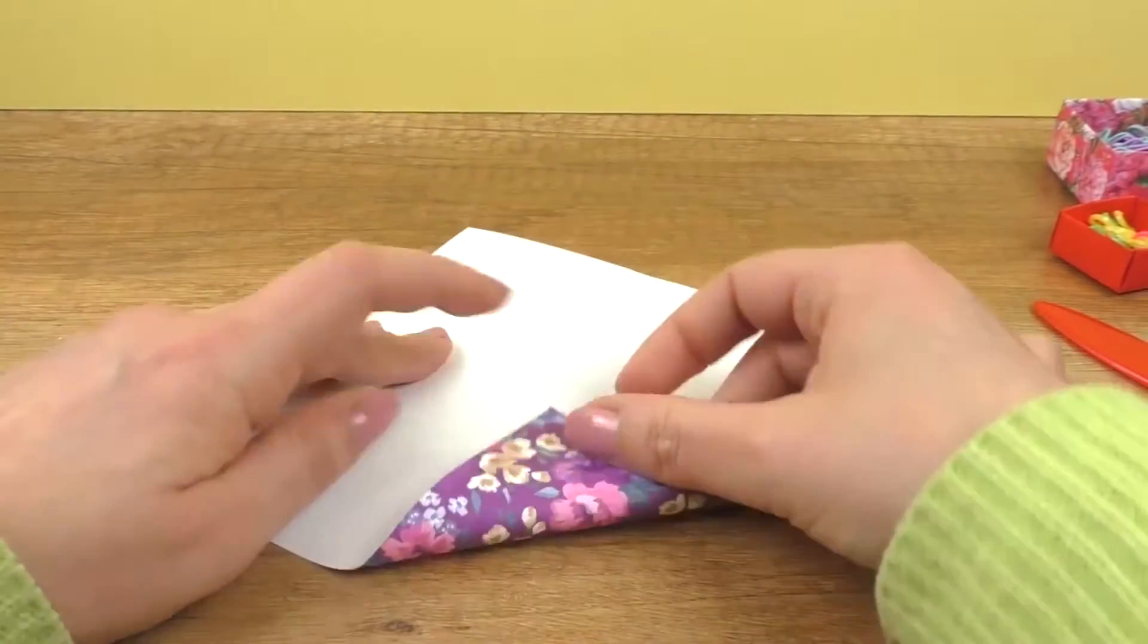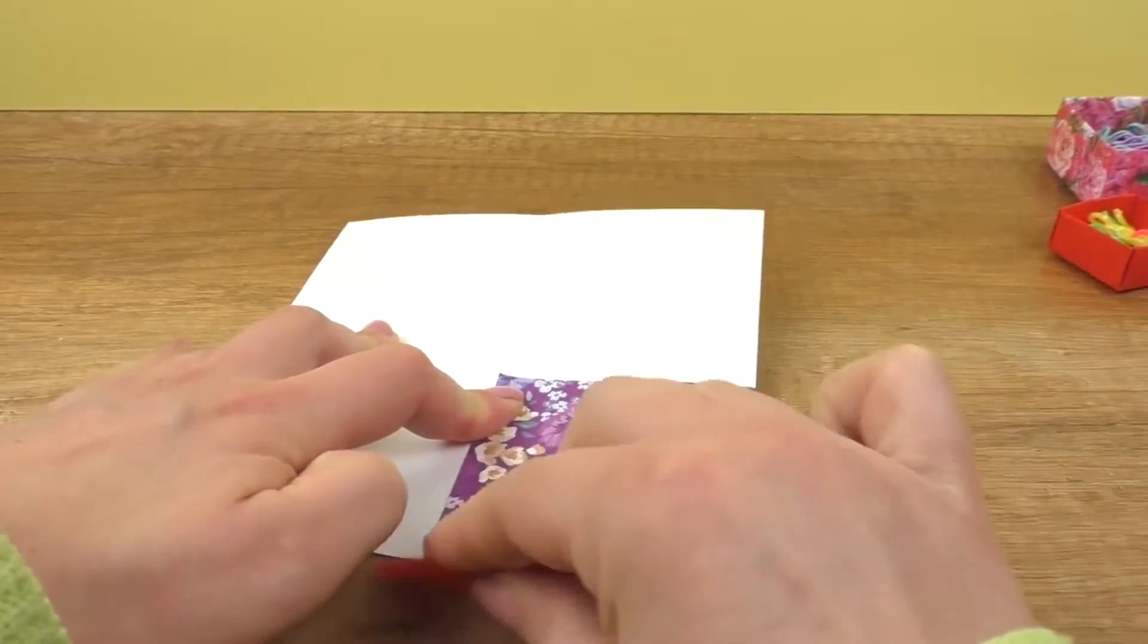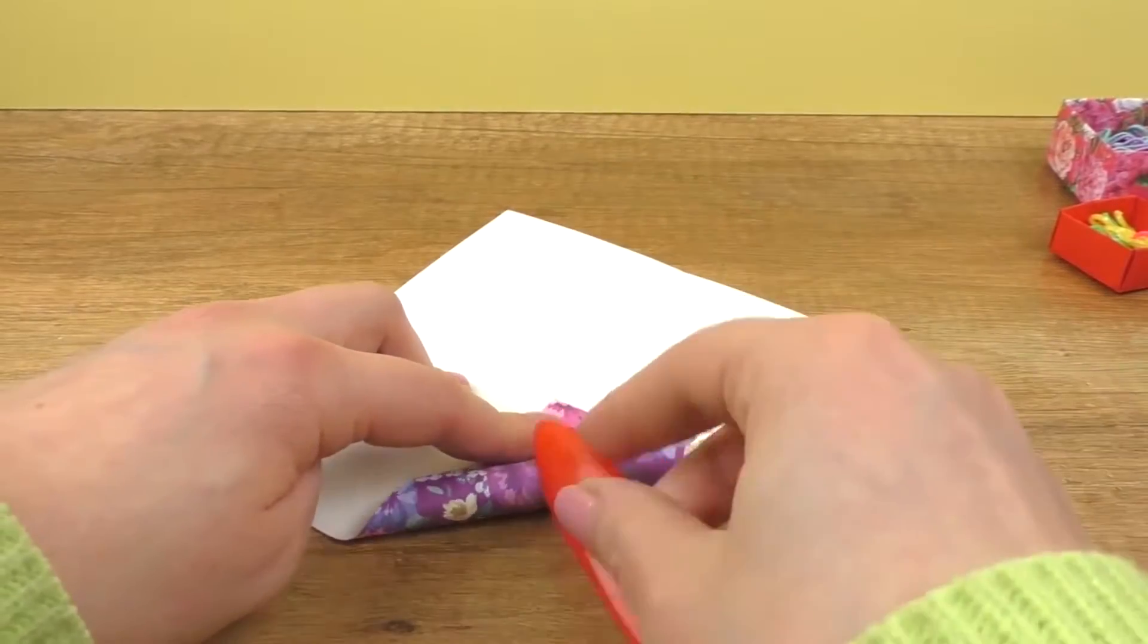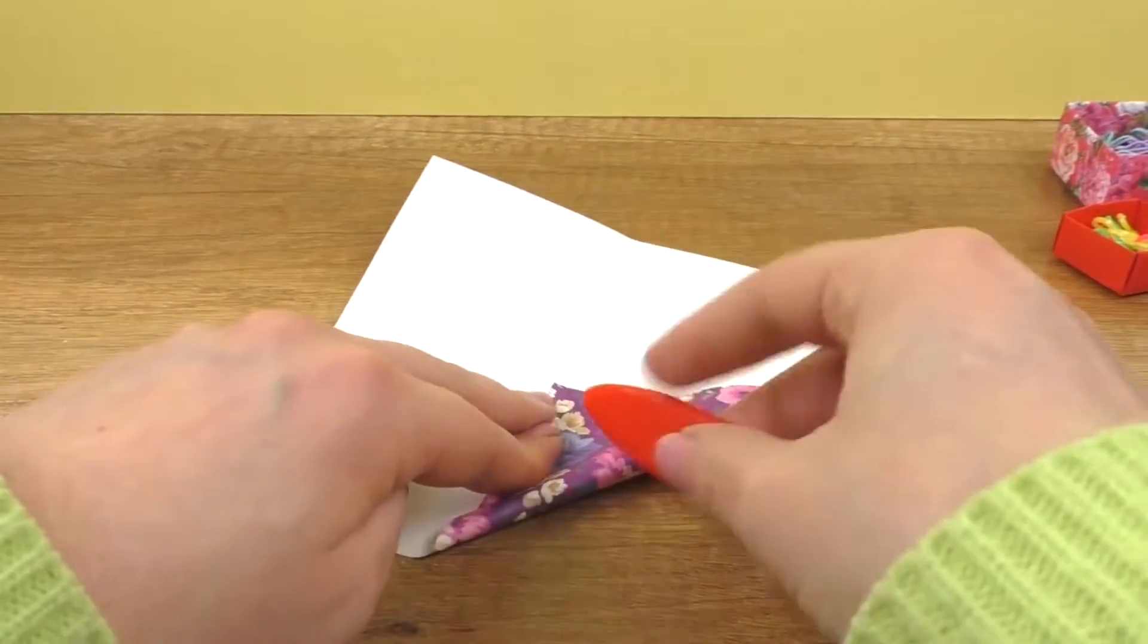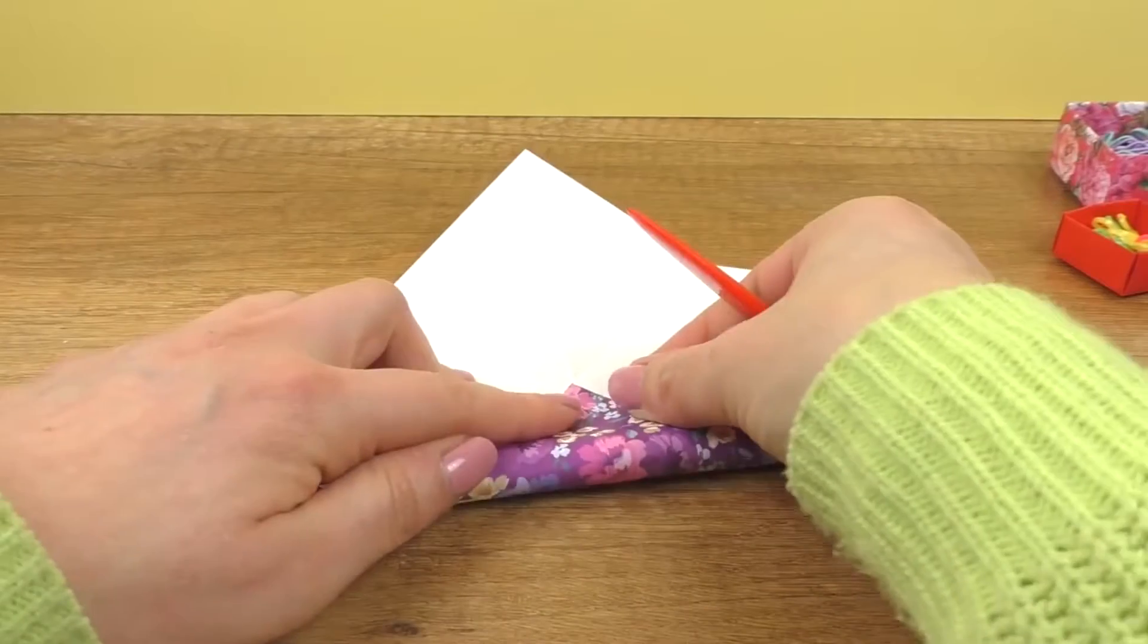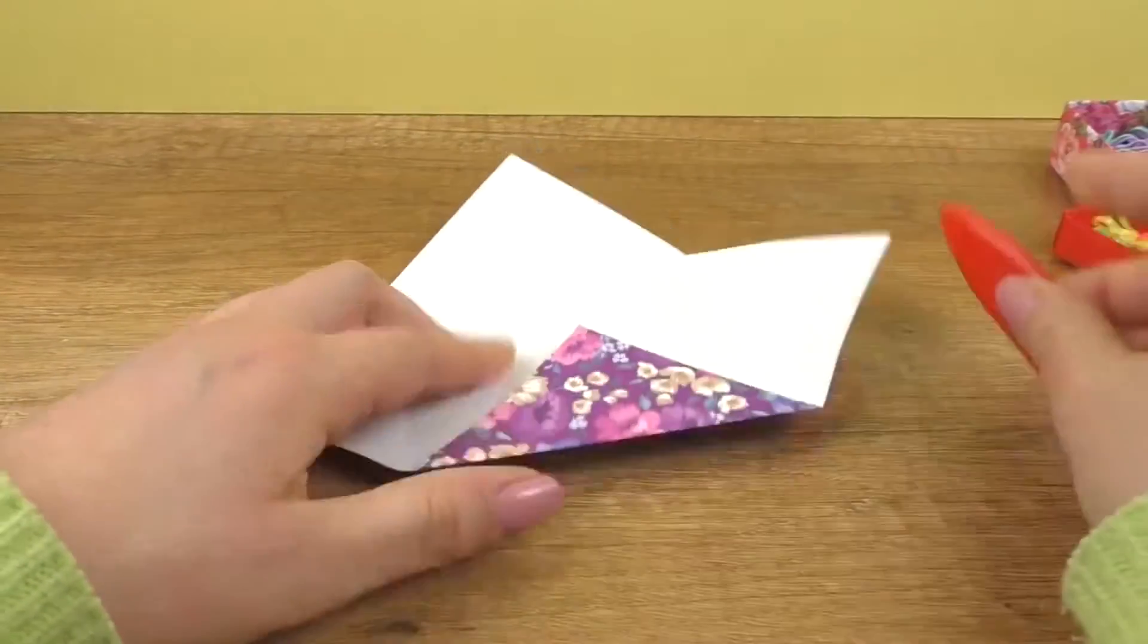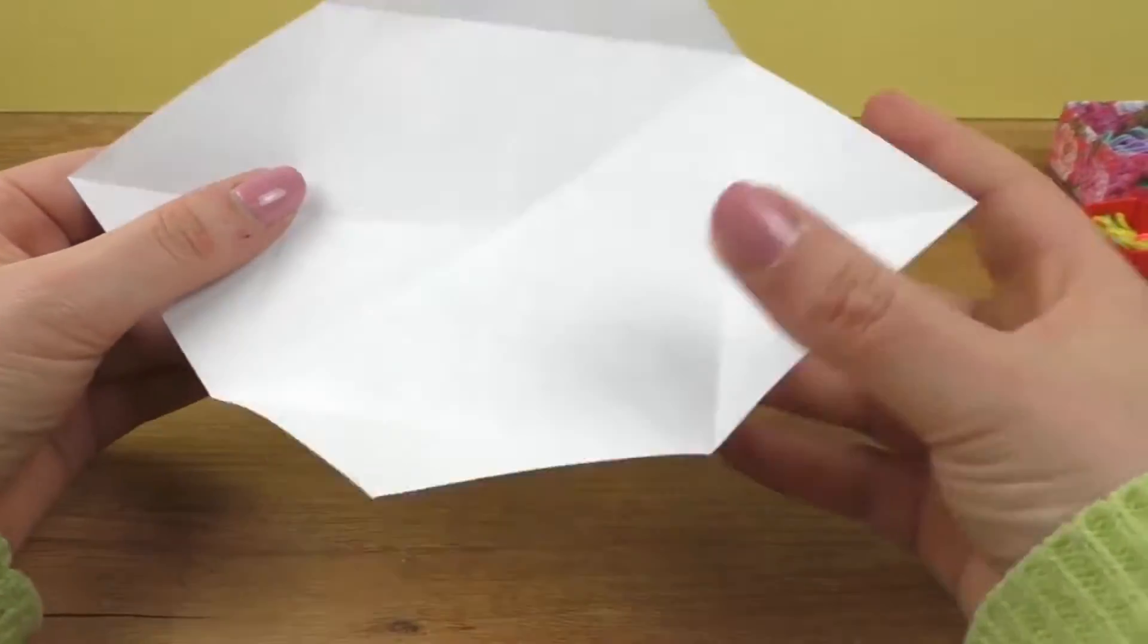So I'm going to take this corner and fold it right in the middle. So there's my first one and then fold it back again. Here's my second one. And then unfold it. Third corner. And fourth corner. So I have some new lines here.